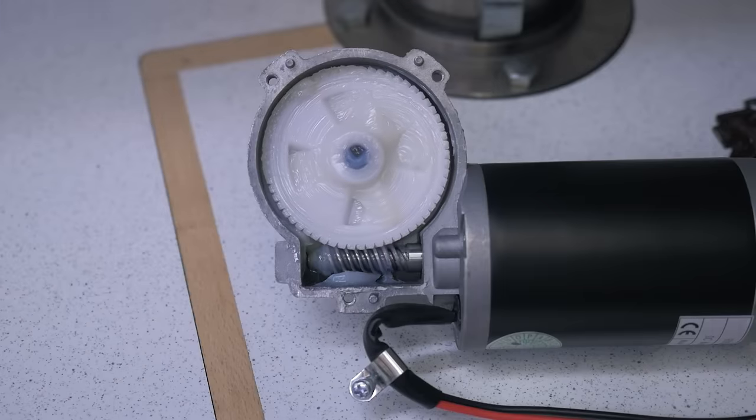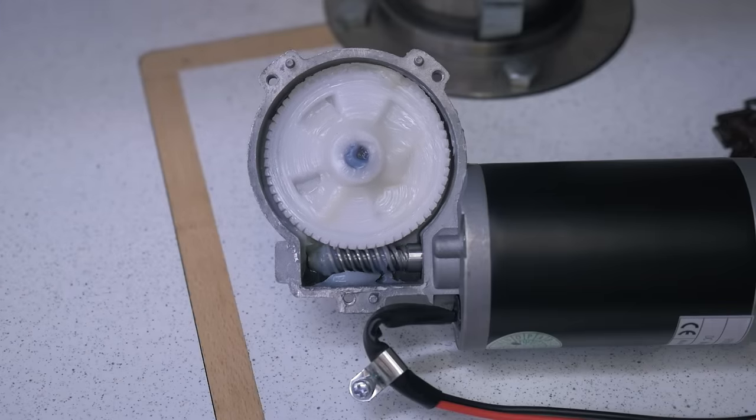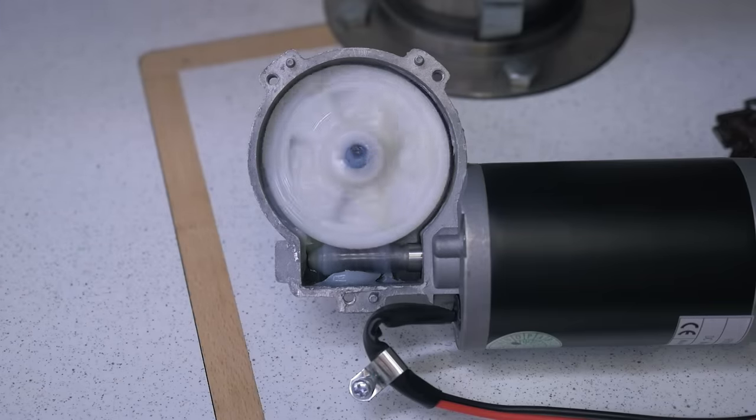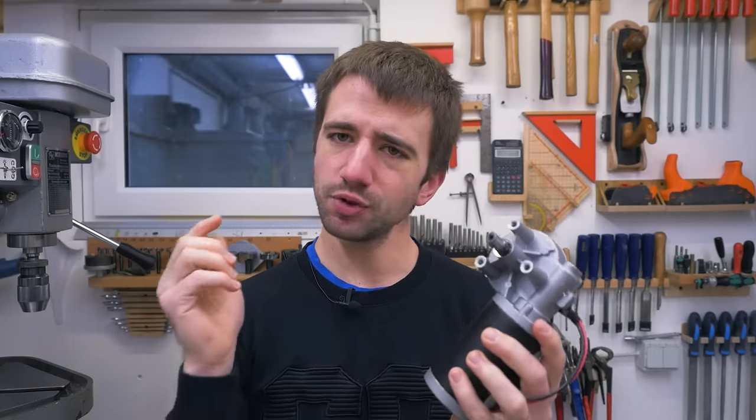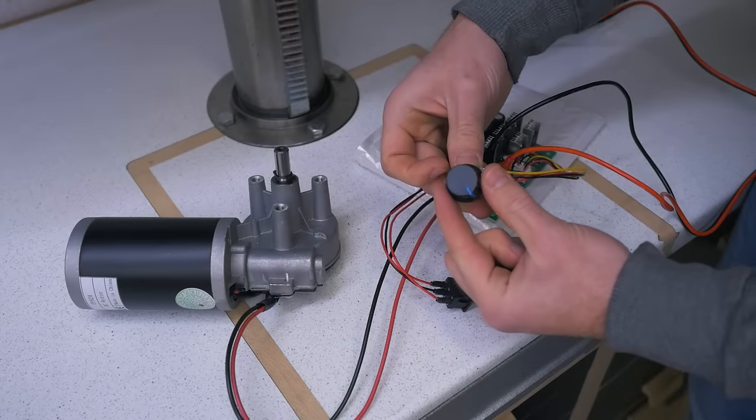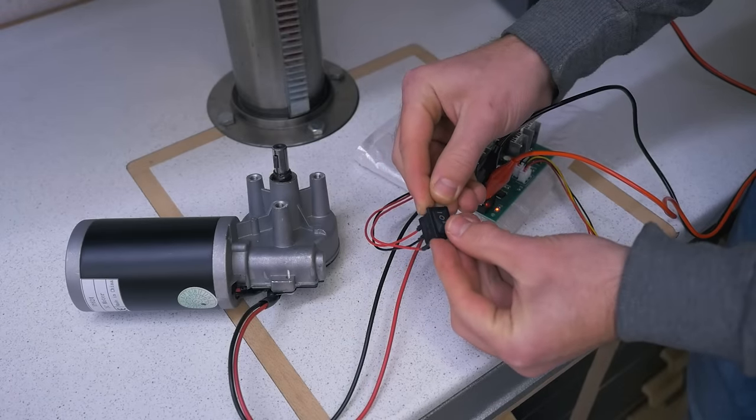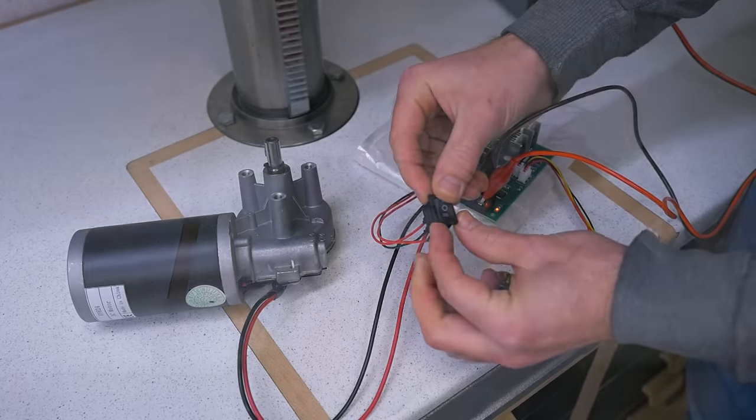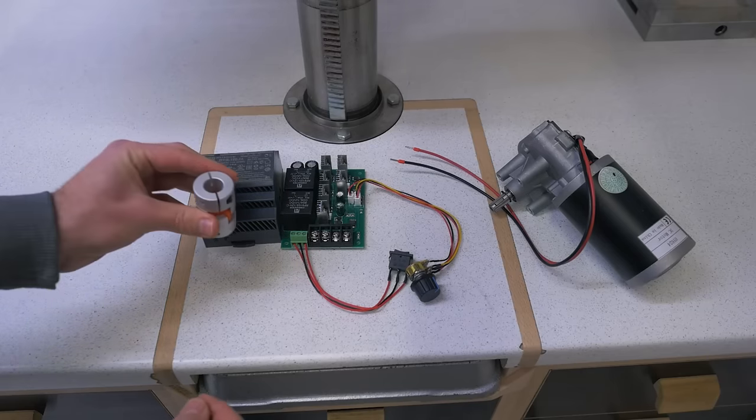This has a worm gear reduction for low RPM and high torque and I got this for about 60 bucks because I knew that I shouldn't get the smallest cheapest one. Then I got a speed controller with a direction switch, a power supply and a shaft coupling.